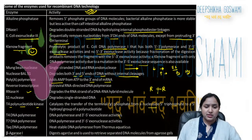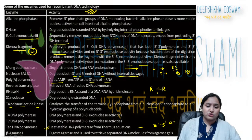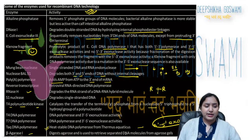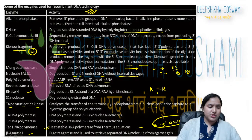Taq DNA polymerase does not have proofreading activity — its 3'→5' exonuclease activity is absent. Then Beta-agarase digests agarose and is used to retrieve separated DNA molecules from agarose gel.